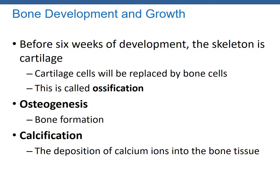Before six weeks of development, the skeleton is cartilage. Cartilage cells will be replaced by bone cells during this time period, and this is called ossification. Osteogenesis begins in utero about 40 days or six weeks after fertilization, when previously cartilaginous or mesenchymal tissues undergo a transformation to osseous tissue. By the addition of calcium salts to the matrix, we start to solidify this material. Calcification is the deposition of calcium ions into the bone tissue. We'll look at the two major types of ossification, bone growth after birth, remodeling, fractures, and the effects of aging.